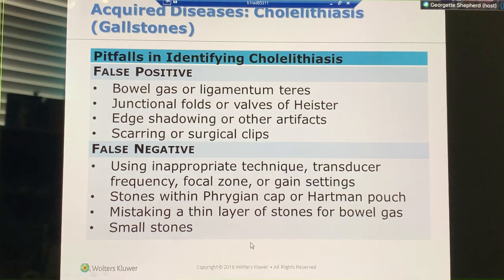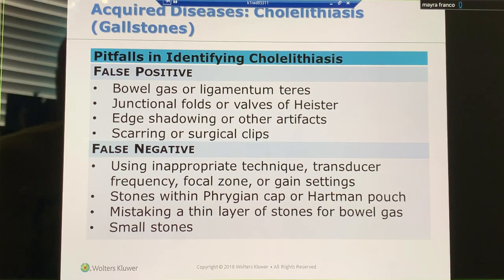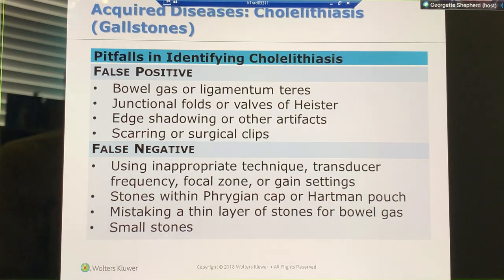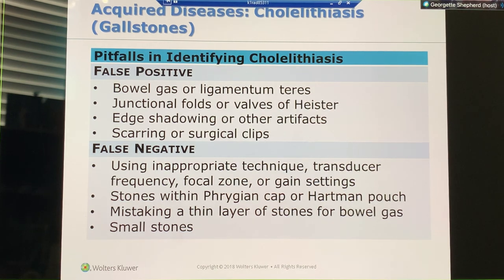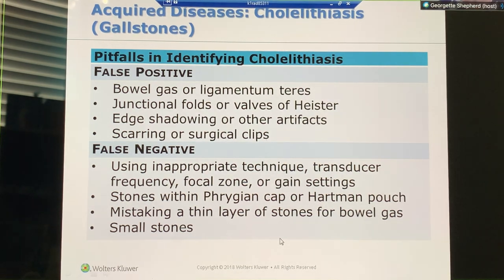False negatives: you can use inappropriate techniques like reverberation, causing that artifact, or the wrong transducer frequency. You have to work your focal zones and pay attention to your gain settings. You might have a phrygian cap at the fundus or a Hartmann's pouch near the neck. We've got to make sure that when we have a layering of stones, we're not looking at bowel gas.